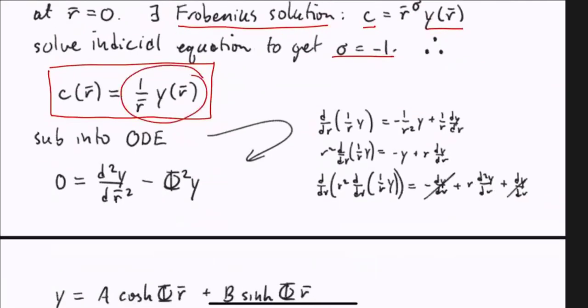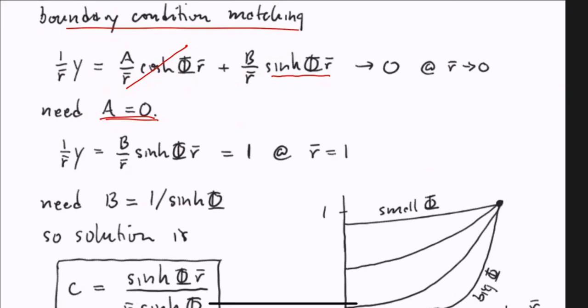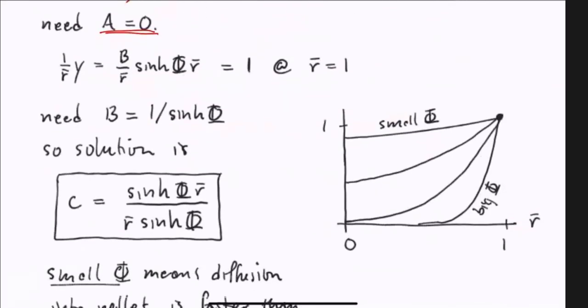If you put this into the equation for C and carry out all the derivatives, you find a lot of things cancel, and you end up with a simplified equation for Y. Y is a simple differential equation with constant coefficients. The sines give you exponential functions. It's more convenient to write those as sinh and cosh. Y equals A cosh(φR̄) plus B sinh(φR̄). Matching boundary conditions at R equals zero, the cosh part gives an unbounded solution, so we need A equals zero. The sinh part goes to zero and looks like a linear function of R, so it's well behaved. At R equals one, B equals 1/sinh(φ). So the solution is C equals sinh(φR̄) over R̄ sinh(φ).